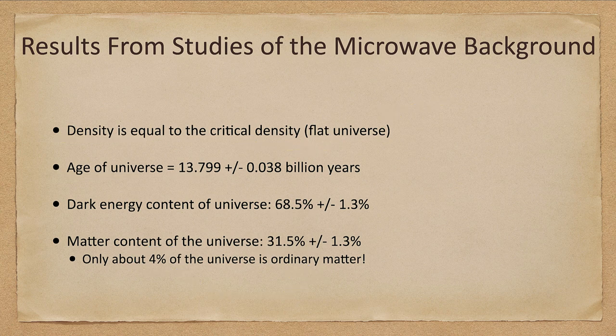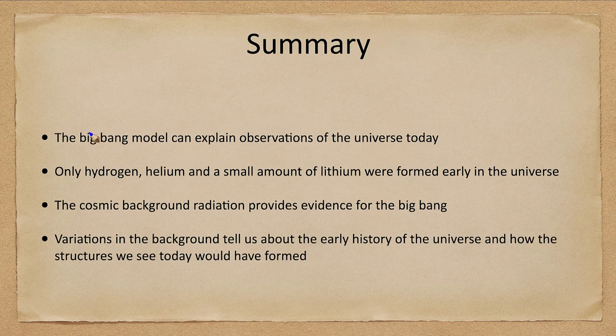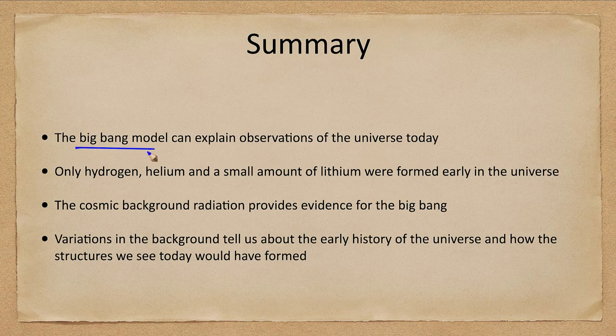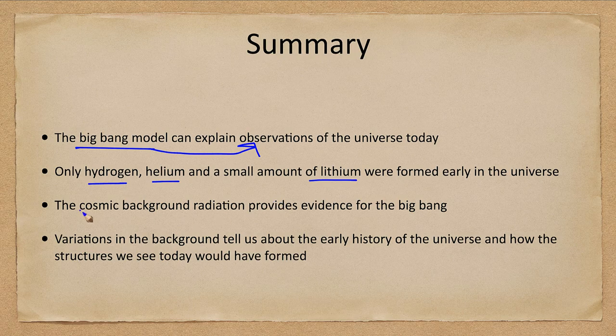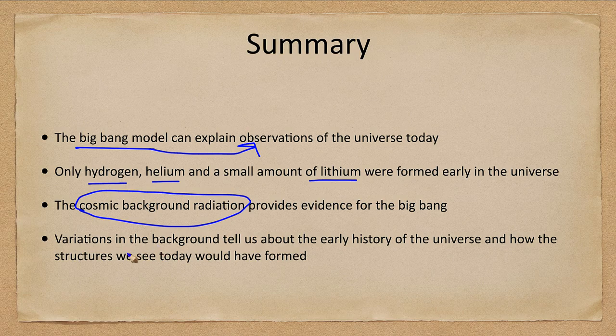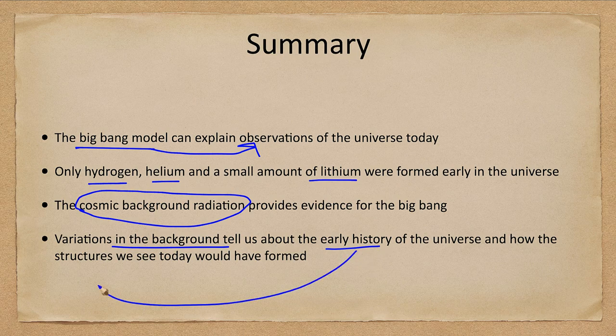Let's go ahead and finish up with our summary. What we've looked at here is that the Big Bang model can explain observations of the universe today. The only things formed in the Big Bang were hydrogen, helium, and a small amount of lithium. Evidence for the Big Bang includes the cosmic background radiation detected in the 1960s. Variations in that background can tell us about the early history of the universe and how the structures we see today were formed.